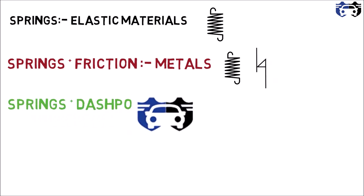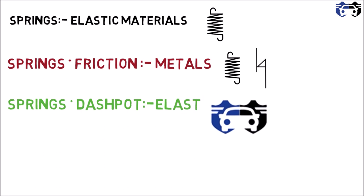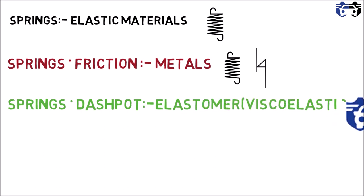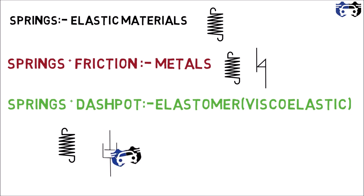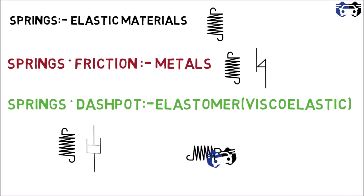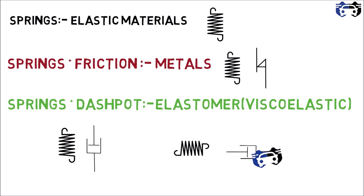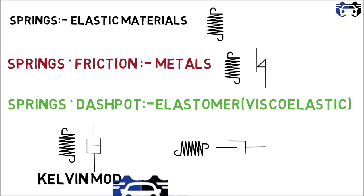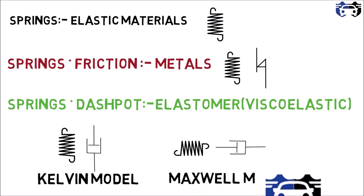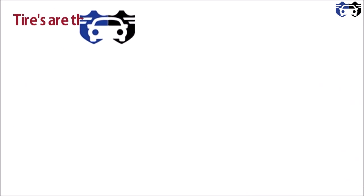Viscoelastic materials, such as elastomers, are shown by a combination of spring and dashpot — either in parallel or in series. The parallel combination is called the Kelvin model, and the series combination is called the Maxwell model.